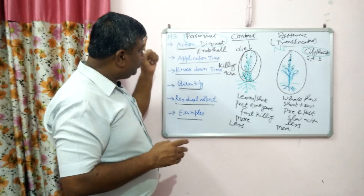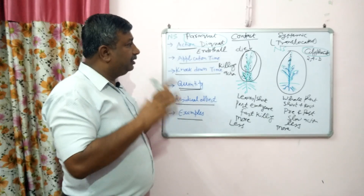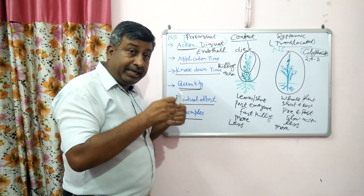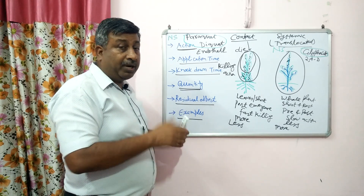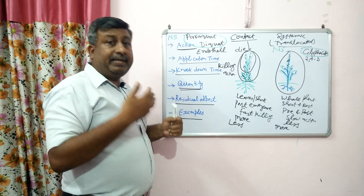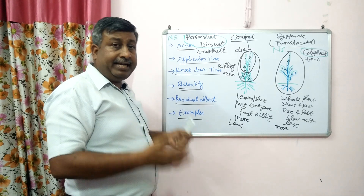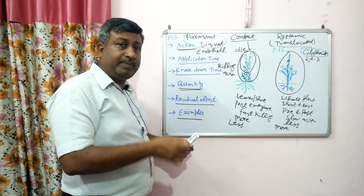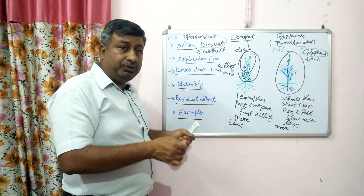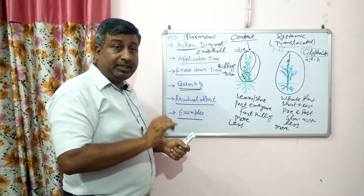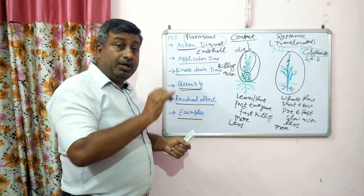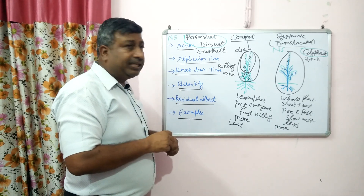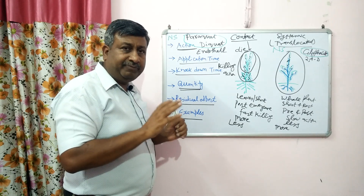If paraquat, diquat, or glyphosate must be used in a standing crop, they should be used only in the inter-row space using a hood, avoiding the crop. If any droplet lands on the crop, it will definitely damage it. This is the problem with non-selective herbicides — they kill all vegetation. That is why non-selective herbicides are generally used in fallow fields.